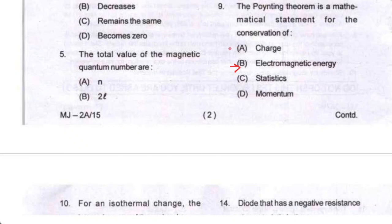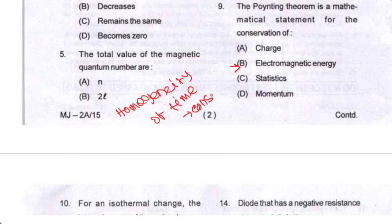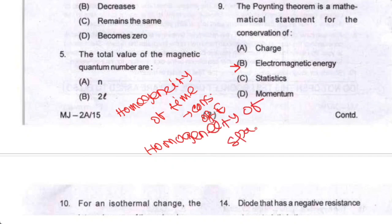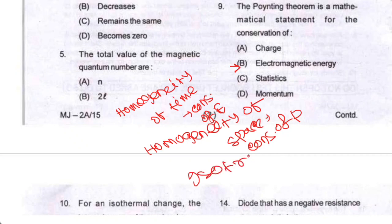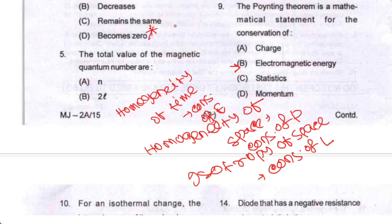Question number nine: the Hamiltonian is conserved due to the homogeneity of time. Homogeneity of time gives conservation of energy. Homogeneity of space gives conservation of linear momentum. Isotropy of space gives conservation of angular momentum. The equation of continuity gives conservation of charge.